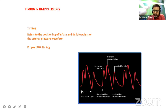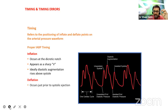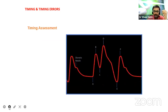This is the waveform of IABP. This is one cardiac cycle — unassisted end-diastolic pressure, unassisted systole, and diastolic augmentation. Timing is very, very important. It refers to the position of inflate and deflate points on the arterial pressure waveform. Inflation occurs at the dicrotic notch and appears as a sharp V. Ideally, diastolic augmentation rises above systole. Deflation occurs just prior to systolic ejection and results in a reduction in assisted end-diastolic pressure and assisted systolic pressure.